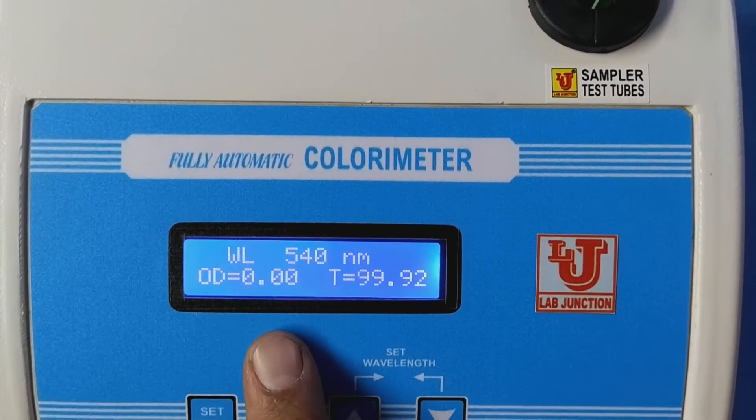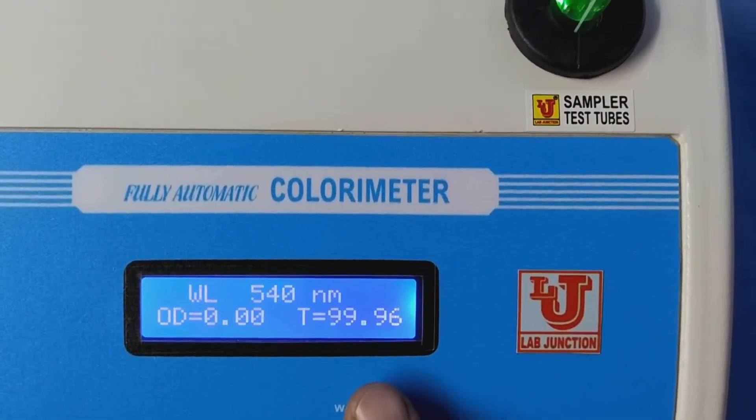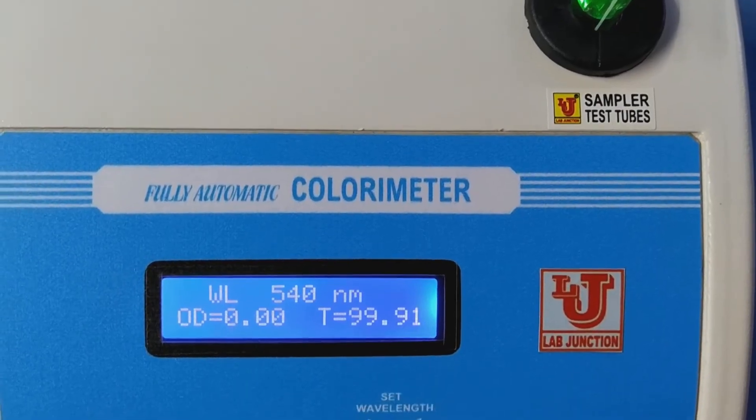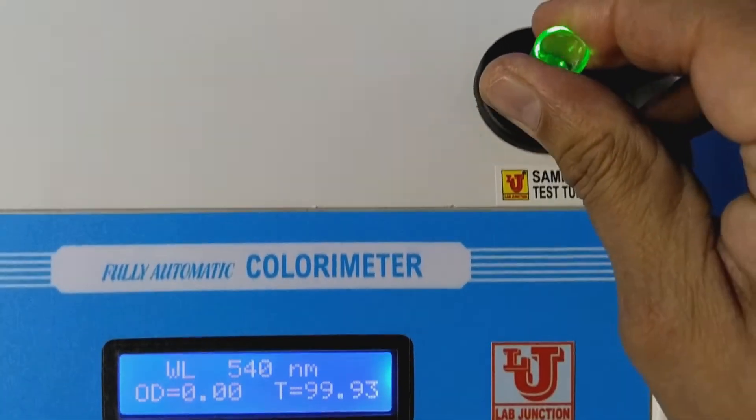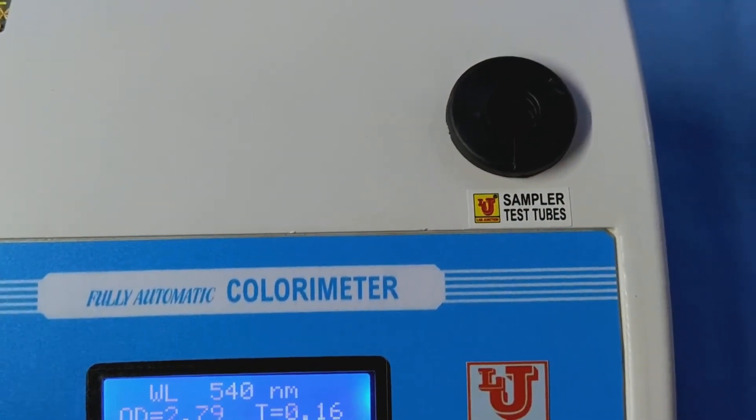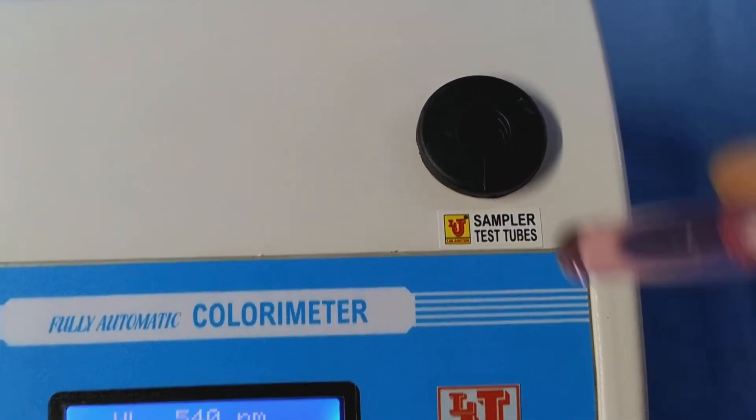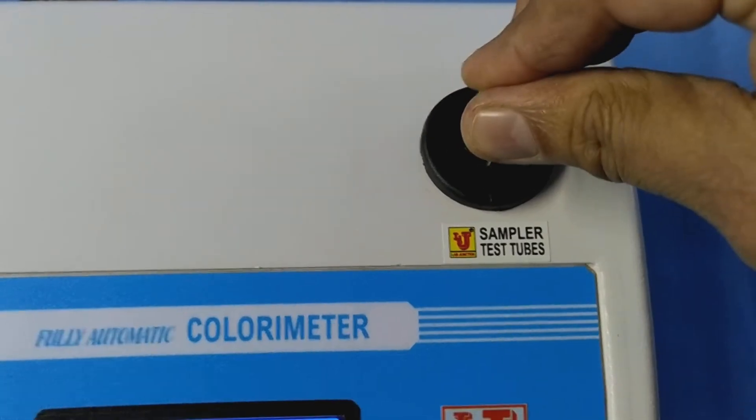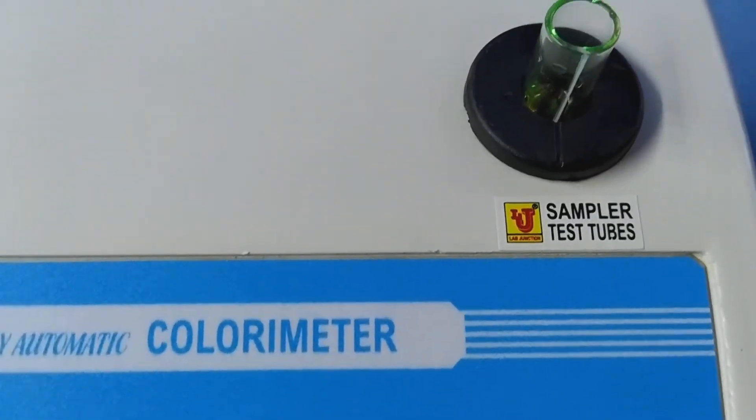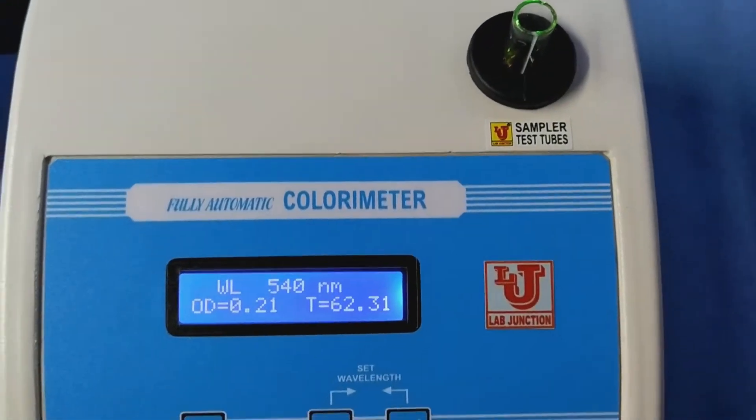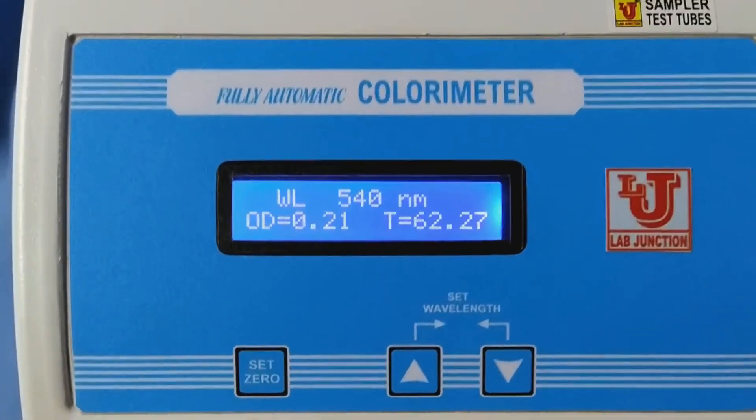Now, your absorbance is 0.00, transmission is 99.94. Now, replace your sample and insert in the test tube holder. Now, your absorbance is 0.21.